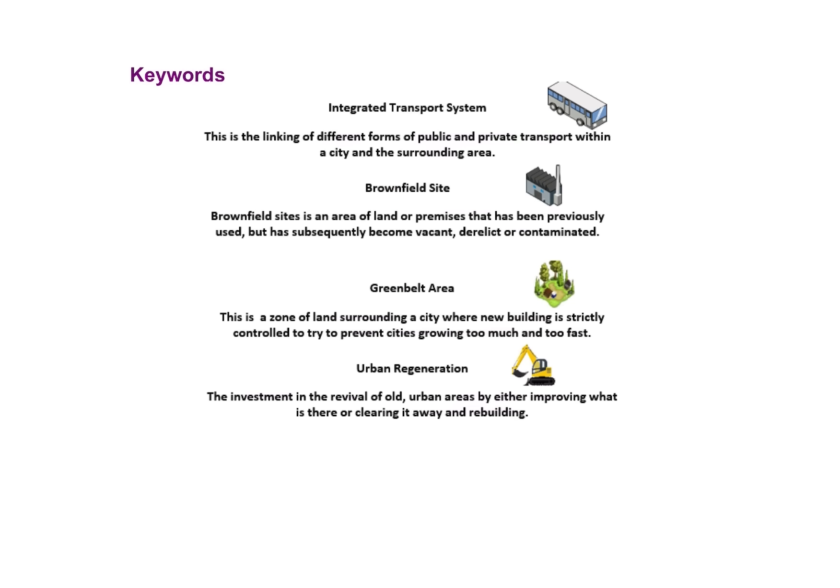Before going further, consider the case study vocabulary for this topic. There are four key terms: integrated transport system — linking together different types of public and private transport; brownfield sites — areas of land that have previously been developed; greenbelt land — areas of green fields surrounding a town or city; and regeneration — when you invest in reviving an area, perhaps by rebuilding it.